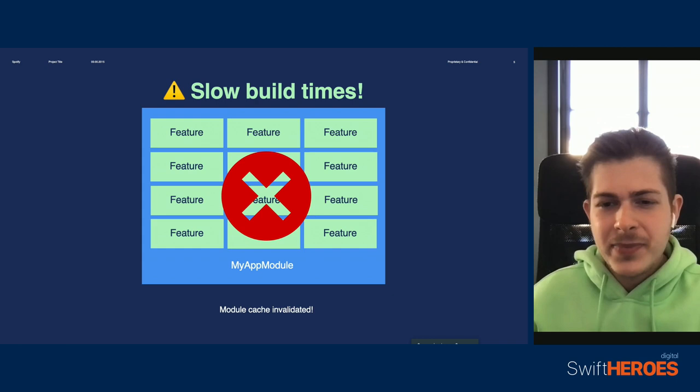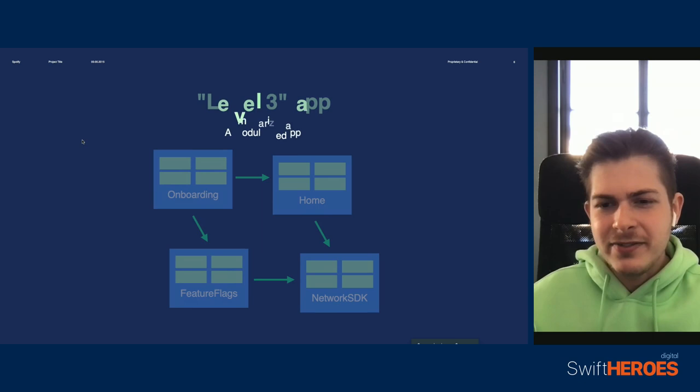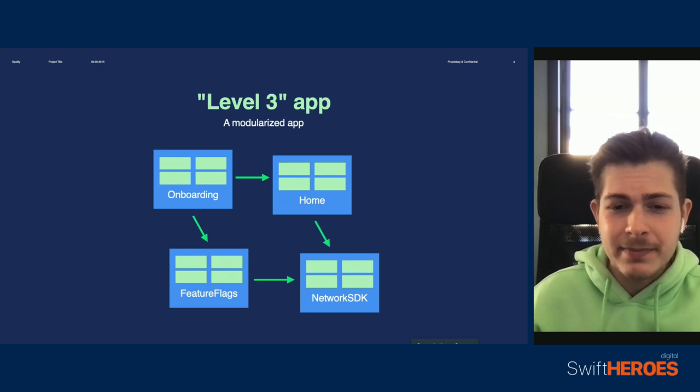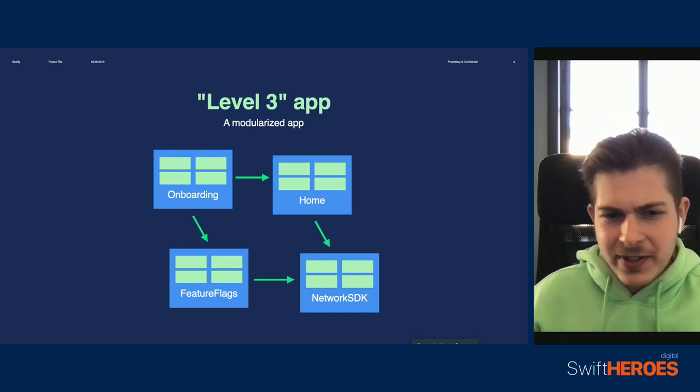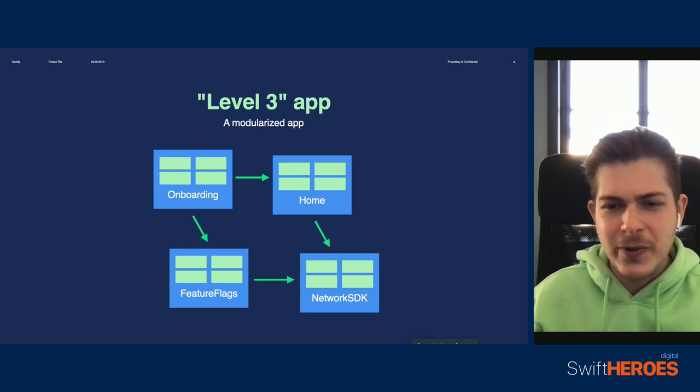Thankfully, this is a well-documented problem in the world of iOS development. This is the point where developers will realize that they can improve their application by dividing their code into multiple modules. The functionality of the app is essentially the same as before, but you're minimizing what needs to be recompiled or regenerated every time you make a change to this app. A very common example of modularization in iOS development is to create a module for each feature or framework of the app, like networking, onboarding, home, and so on.